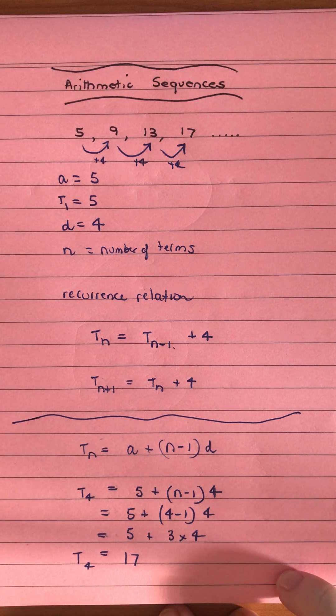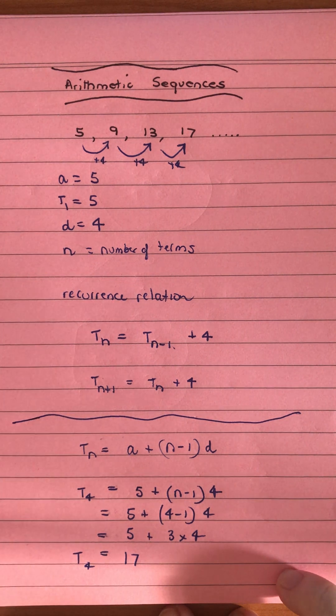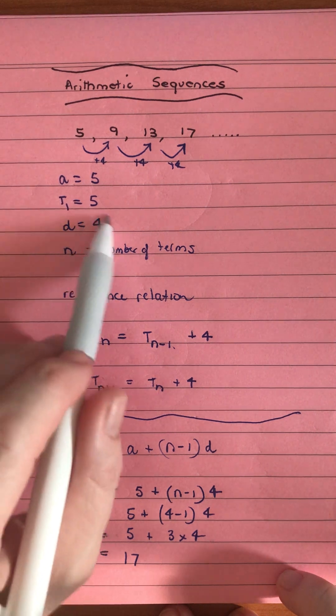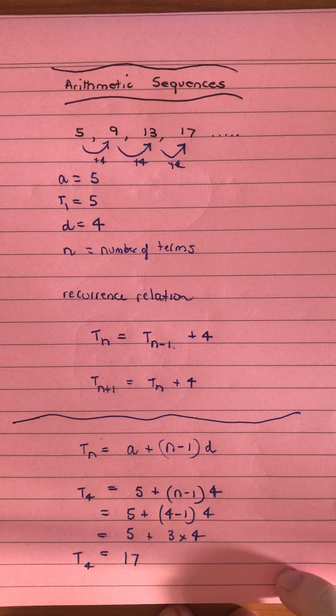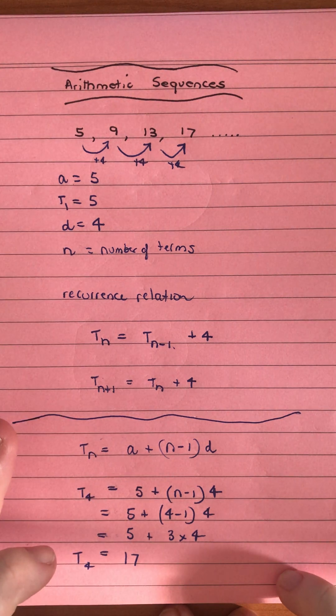We can also look at the sum of a sequence, which has a rule as well, but I'm going to leave that for now. Arithmetic sequences can also go down in value with a negative d. We can have sequences starting with negative numbers or decimal values. This is just one of the simplest forms.